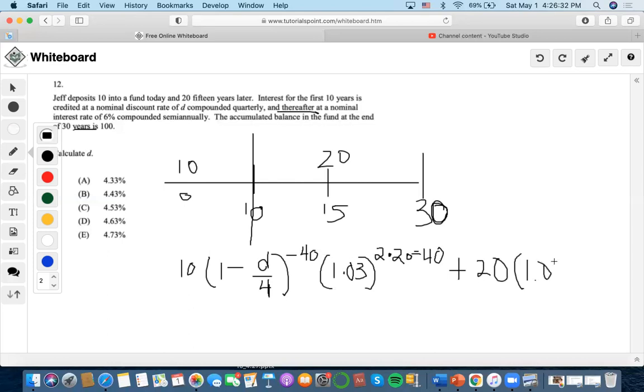From the time 20 is deposited, how much time has elapsed? 15 years. So 15 times 2, which is 30. Then we set this whole thing equal to 100.